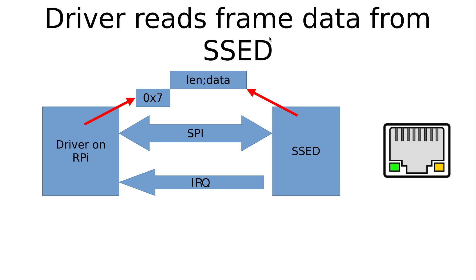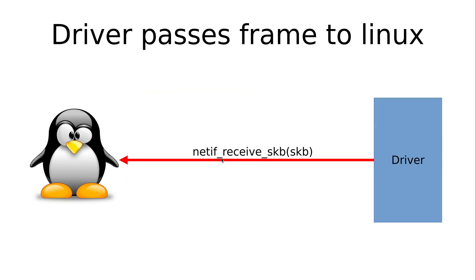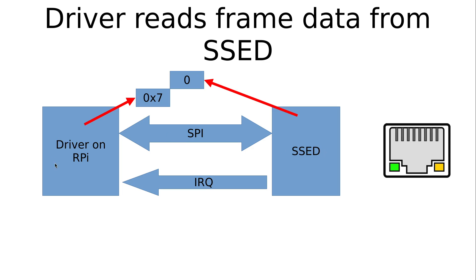After successfully reading out a received frame, the driver will call the function netif_receive_skb. A frame in Linux is represented in a socket buffer, the SKB. This function will process the received frame. After receiving one frame successfully, the driver issues the receive frame command again. If the SET device has no more received frames, it will send two zero bytes to indicate the length is zero.